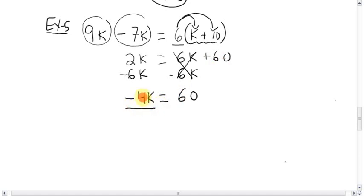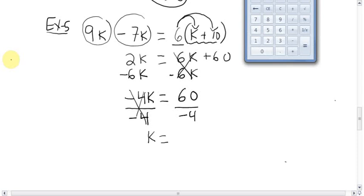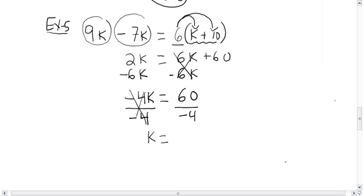2 minus 6k is negative 4k. You should be able to handle negatives, no problem. And you get 60 here. Divide this by negative 4. It's so tempting just to say, oh, minus 4 plus 4. No, no, no. It's negative 4 multiplied by k. So we divide by negative 4. Divide by negative 4. The 4s are gone. k equals, and if you don't know what 60 divided by 4 is, you can always use a calculator. 60 divided by, and I have to do 4 first, then negative, negative 15. Hopefully you know it in your hands. Negative 15. There you are.